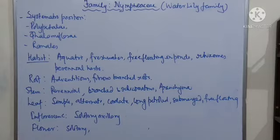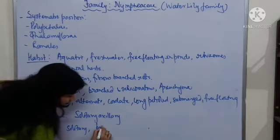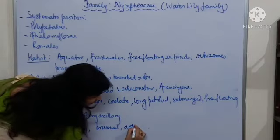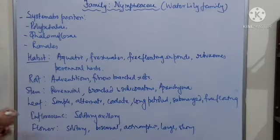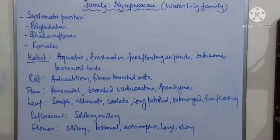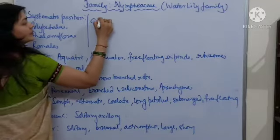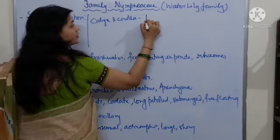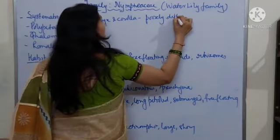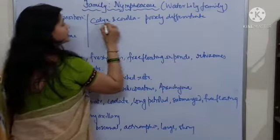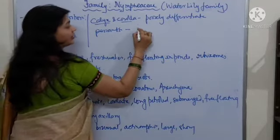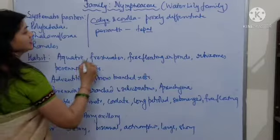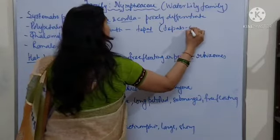The flower is solitary, meaning a single flower attached to the axis. The flower is bisexual and actinomorphic. They are large, showy, and colourful, found in various colours. Sometimes calyx and corolla are poorly differentiated, which means perianth is present. The unit of perianth is known as tepals, and the number of tepals is generally 6.